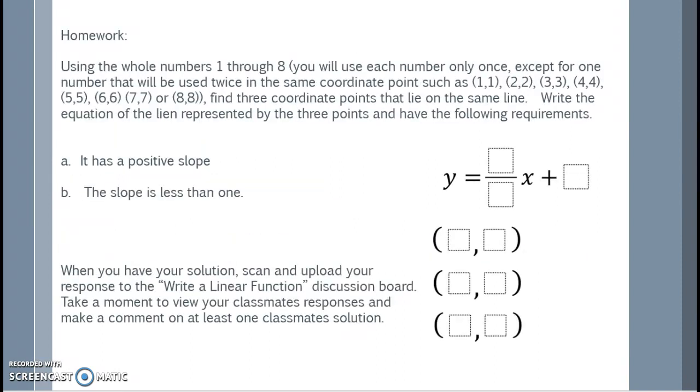Using the whole numbers 1 through 8, you will choose each number once except for one number that will be used twice as the same coordinate point, such as 1, 1, 2, 2, 3, 3, 4, 4, etc. Find three coordinate points that lie in the same line. Write the equation of the line represented by the three points and have the following requirements. It has a positive slope and the slope is less than 1.